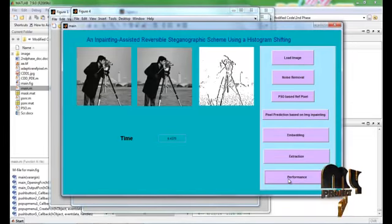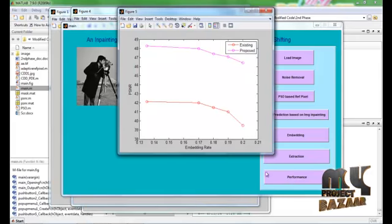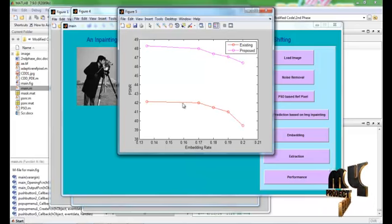After that we can calculate the performance of the proposed algorithm. This is the PSNR value of the existing method has lower values. And this is our proposed method has higher values than the existing methods.